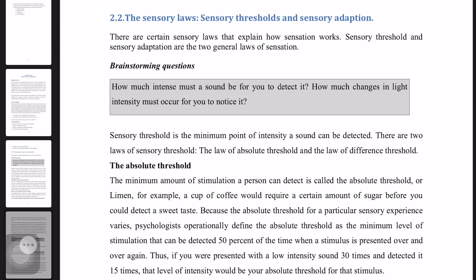Otherwise, you will be able to understand that the second taste is different from the other. The minimum amount of stimulation a person can detect is the absolute threshold. Because the absolute threshold for a particular sensory experience, psychologists operationally define the absolute threshold as a minimum amount of stimulation that can be detected 50% of the time when the stimulus is presented over and over.